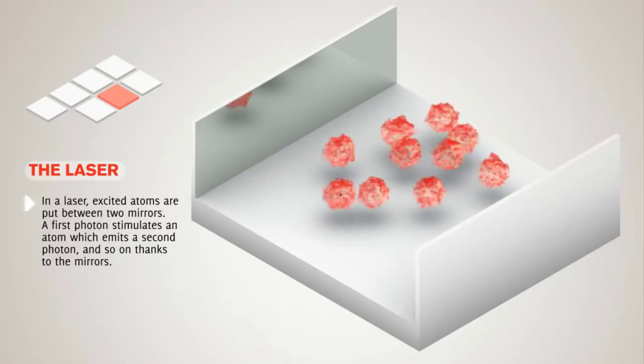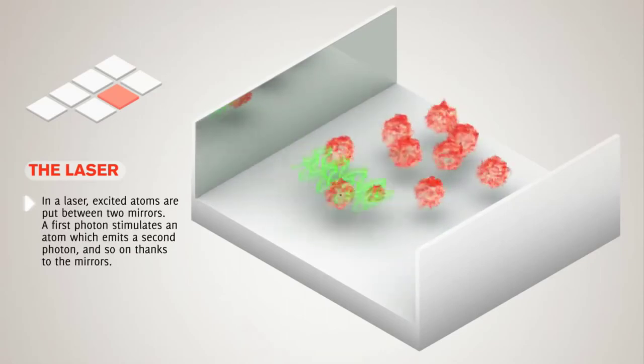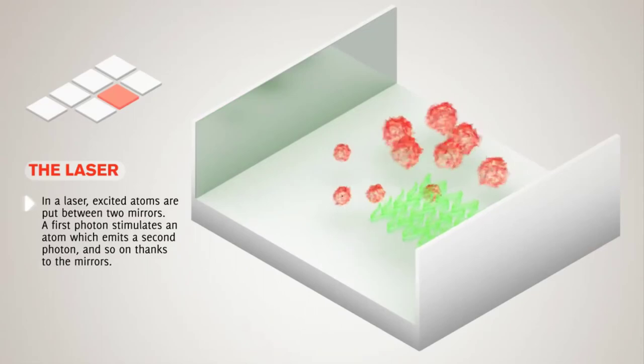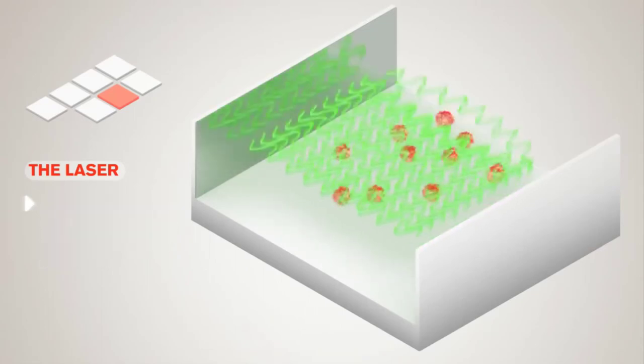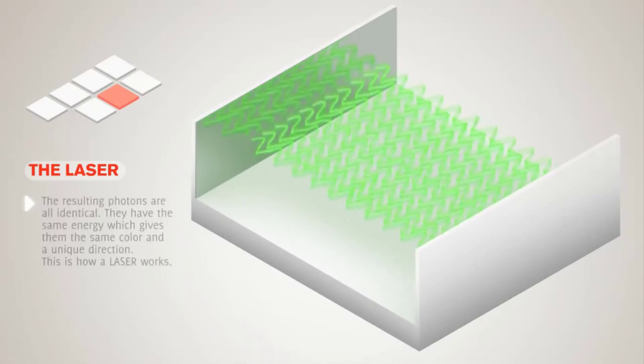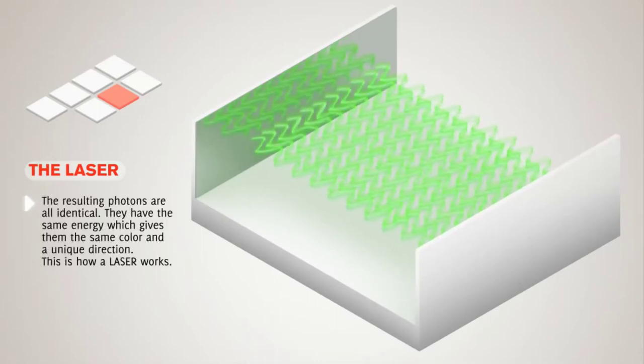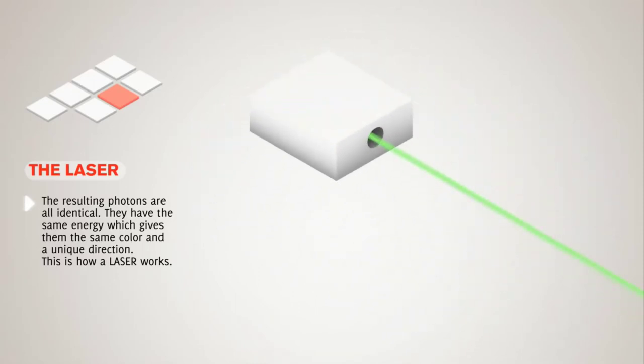This triggering photon stimulates the upper state atom to emit a photon and both these photons will come out. These two can again stimulate two more atoms and result in four photons. Thus, instantaneously, there will be an avalanche of photons. All these photons are exact replicas of the first triggering photon.